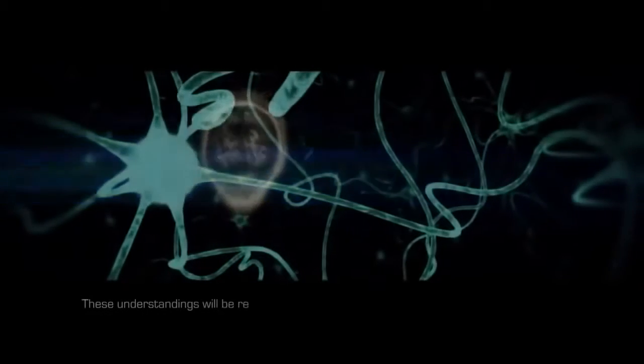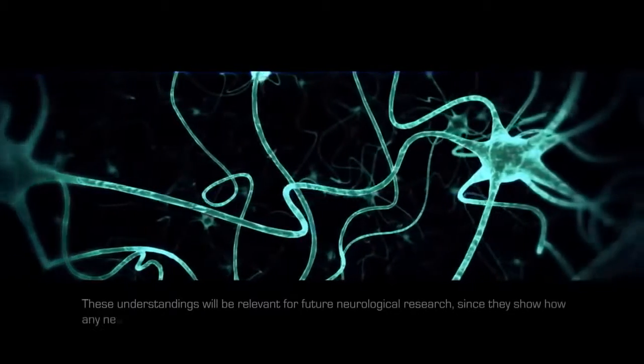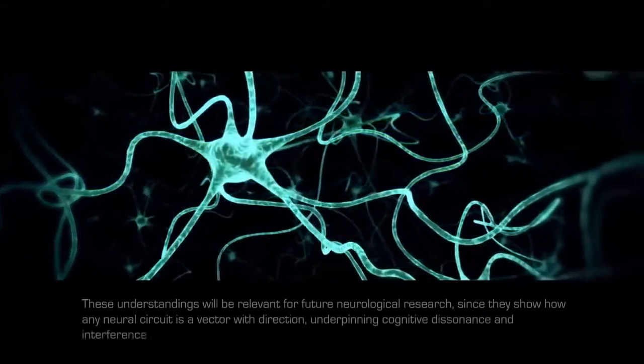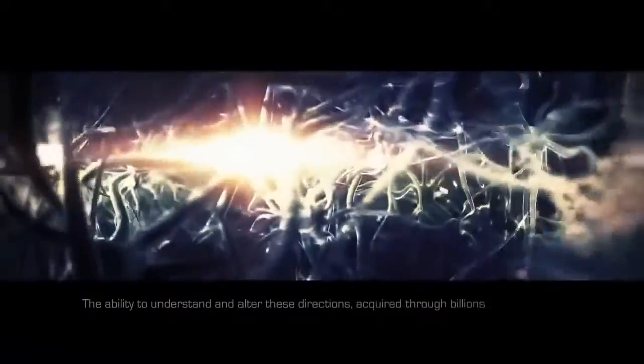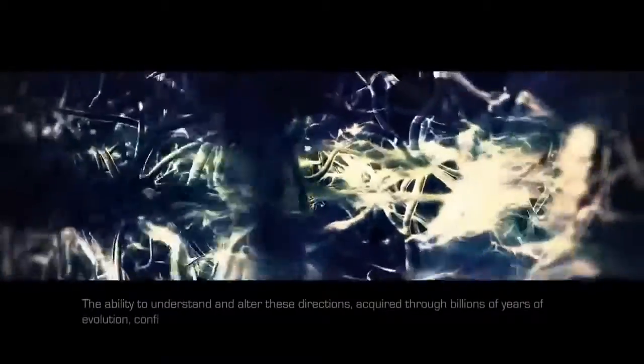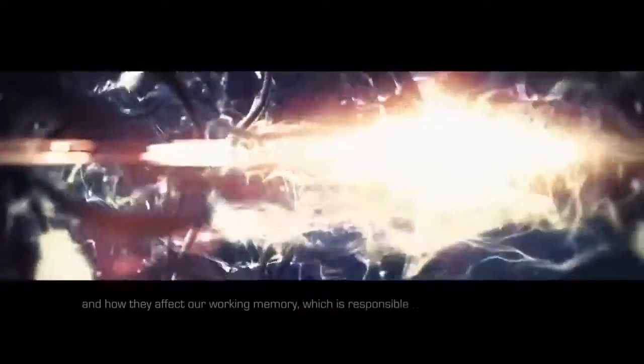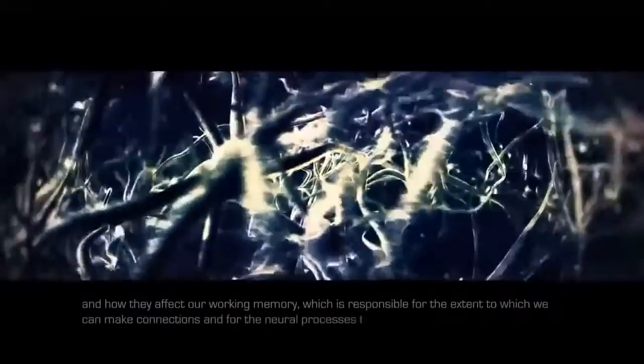These understandings will be relevant for future neurological research, since they show how any neural circuit is a vector with direction, underpinning cognitive dissonance and interference or resonance within C. The ability to understand and consciously alter these directions, acquired through billions of years of evolution, confirms how important our belief systems are in expanding our awareness, and how they affect our working memory, which is responsible for the extent to which we can make connections and for the neural processes that create meaning.